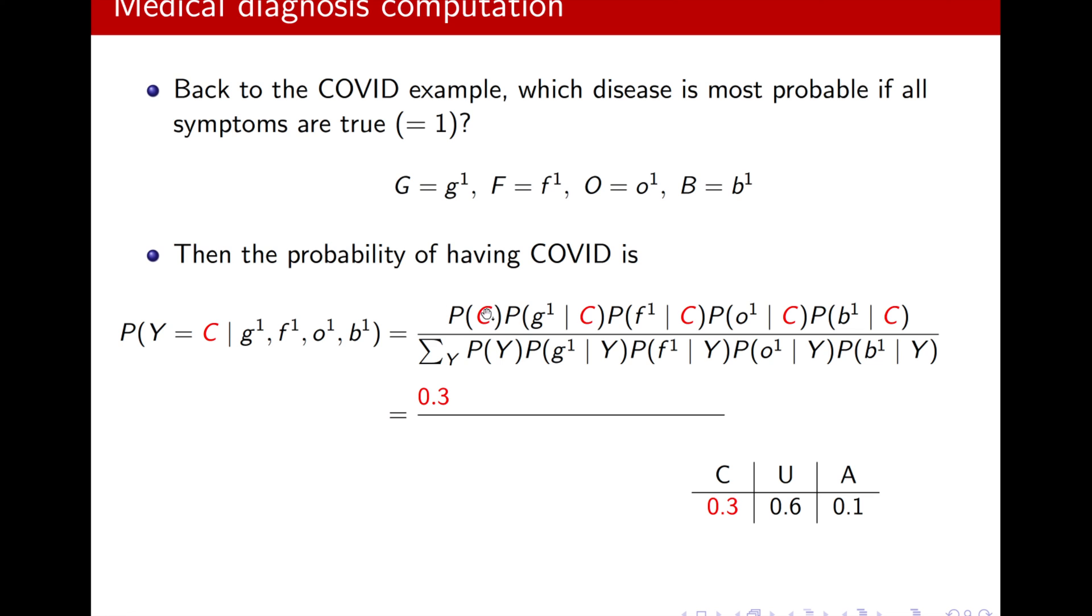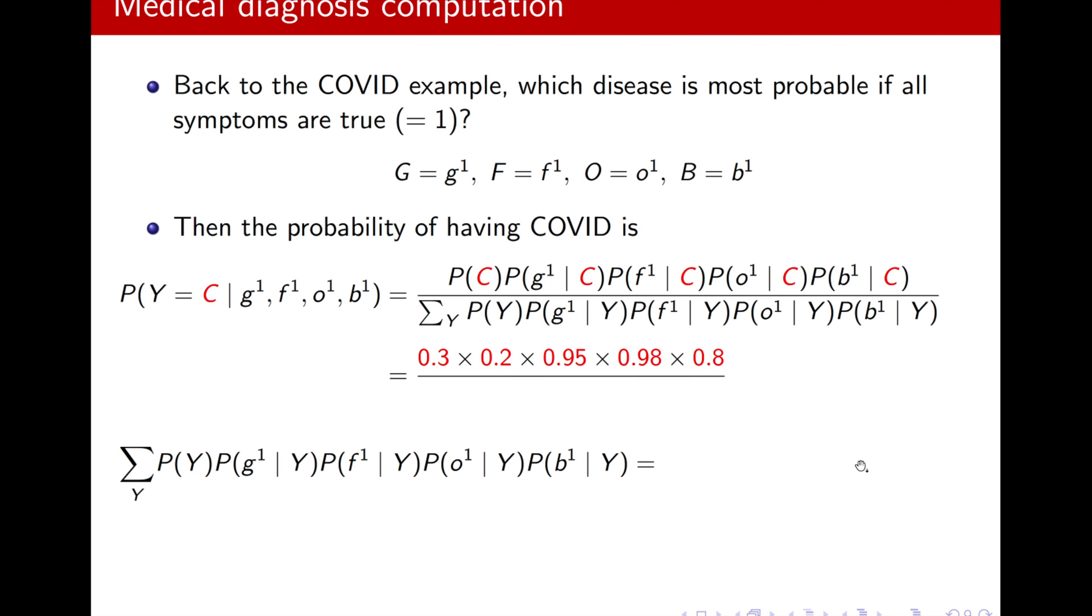And how can I get these numbers from the CPDs? Okay, let's go through that step by step. So, the first one. If I want to get P of C, I just look at the CPD of the class variable. And I see that for C, I have 0.3. Next, P of G1 condition on C. So, I need to look for the variable G. And here it is. I see that for G1, I have 0.2. And this is the C variable. For F1, same story. I look at the row corresponding to C. And so on. For O and for B as well.